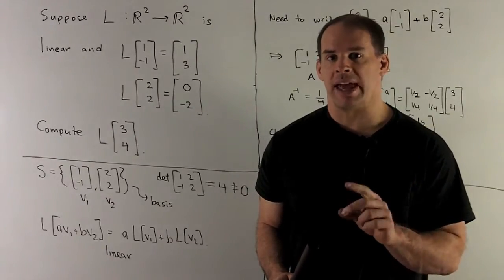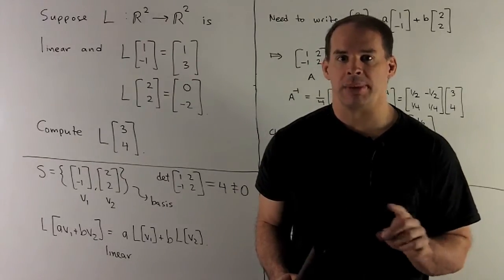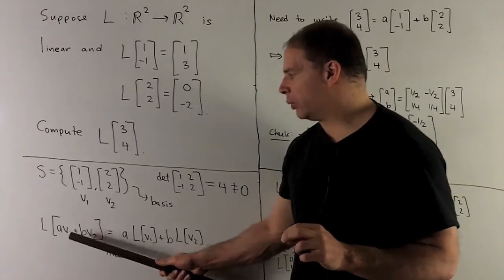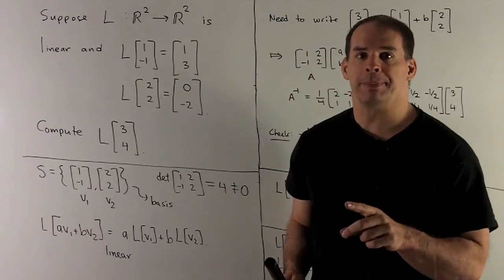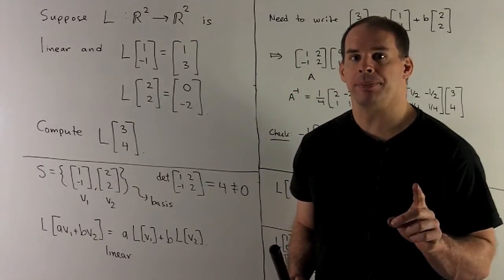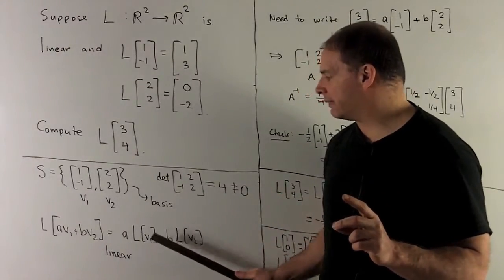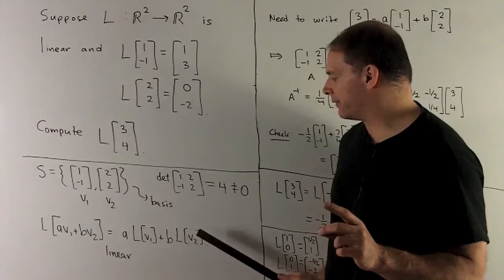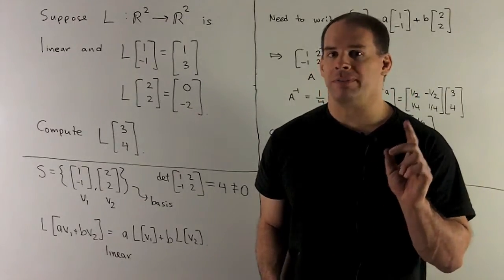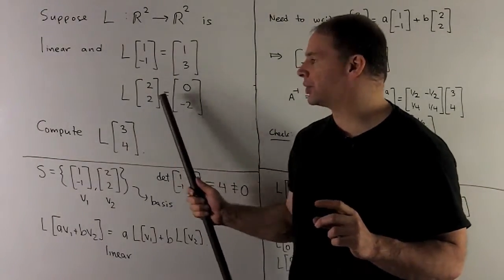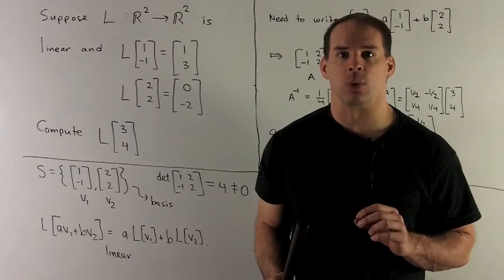We're given that L is linear, so what does that mean? If I take a linear combination — say A·B₁ plus B·B₂ — we're allowed to split it and pull the scalars out. So this means A times L of B₁ plus B times L of B₂. If I know how to write (3, 4) in terms of (1, −1) and (2, 2), then we can apply this trick to figure out L of (3, 4).